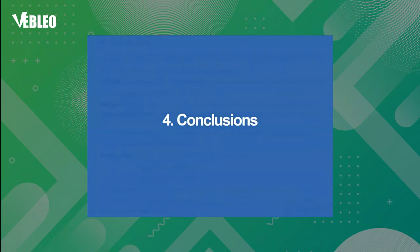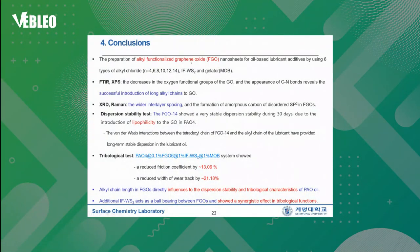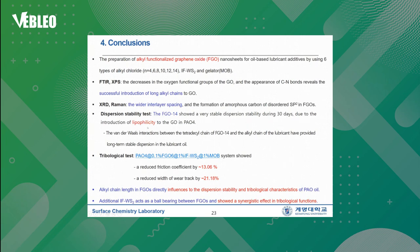Let me make a conclusion for the seminar. We have prepared alkyl-functionalized graphene oxide nanosheets for oil-based lubricant additives by using six types of alkyl chlorides, IFWS2, and a gelator. FTIR and XPS spectra show a decrease in oxygen functional groups of GO, and the appearance of C-N bonds reveals the successful introduction of long alkyl chains to GO. XRD and Raman spectra show wider interlayer spacing and the formation of amorphous carbon of disordered sp2 in FCOs. By the dispersion stability test, FCO14 showed very stable dispersion during 30 days due to the introduction of lipophilicity to graphene oxide in PAO4 oil. The Van der Waals interaction between the tetradecyl chain of FCO14 and the alkyl chain of the lubricant provided long-term stable dispersion in the lubricant oil.